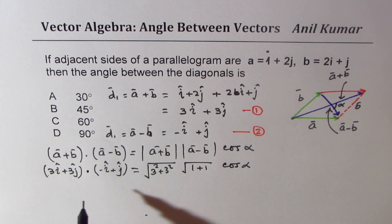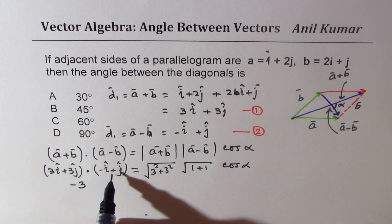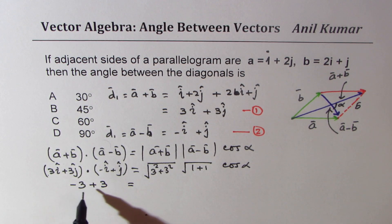Now when you do the dot product, you get 3i · (-i), -3, and 3j · j will be +3.